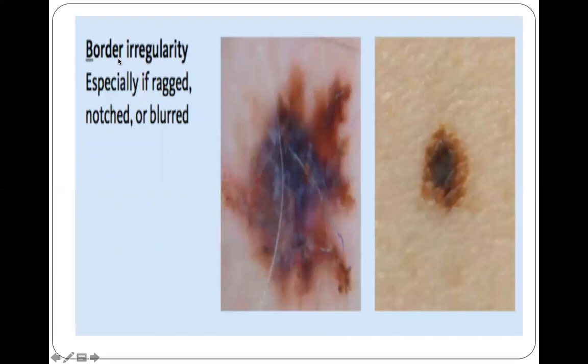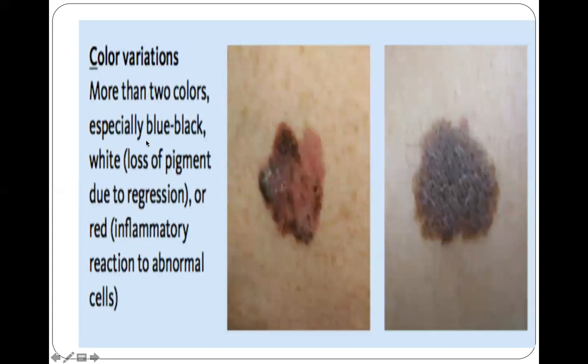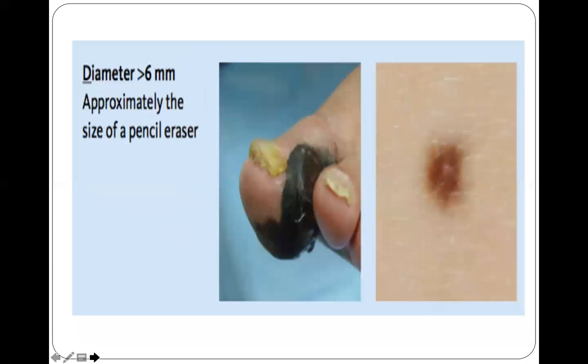C stands for color variation. If you have more than two colors — especially blue, black, white, or red — that can indicate probable melanoma. A benign nevus usually has a uniform color. D stands for diameter: more than 6 mm suggests melanoma, while less than 6 mm is more likely a benign lesion.